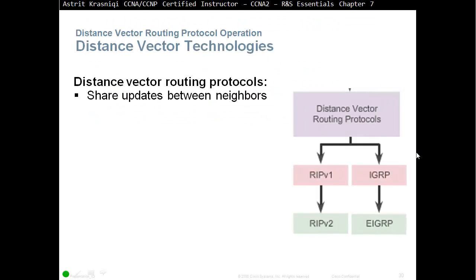Distance vector routing protocols share updates between neighbors, as do link state routing protocols. They are not aware of the network topology. The problem with distance vector routing protocols is that they just learn about the direction and how far it is — they have no idea of the actual network path to get there. And then they suffer from routing loops, so we have to implement other technologies to prevent those routing loops.